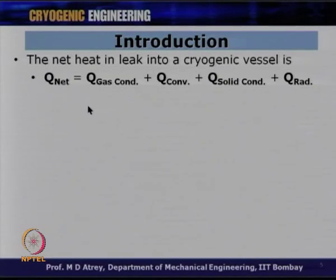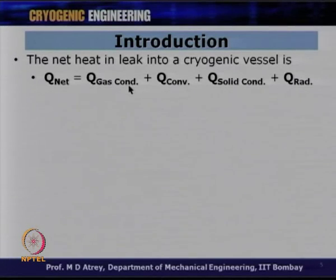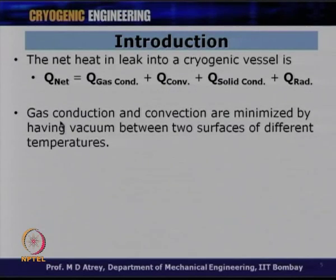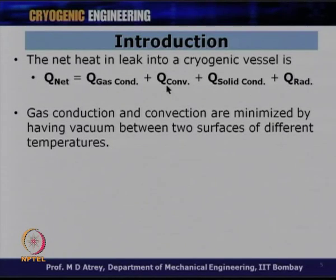If we produce good vacuum, the gas component can be largely ruled out. The amount of gas available in a particular space would be negligible, so we can neglect Q gas conduction and therefore also Q convection caused by the presence of gas in that space. So, if we have good vacuum, Q gas conduction and Q convection can be minimized — the heat in-leak from gas convection and conduction is minimized by having vacuum between two surfaces of different temperatures.